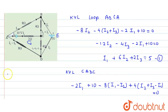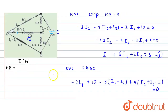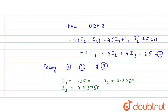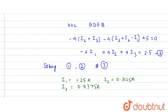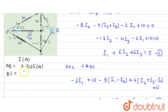Now we find the current in each branch. In branch AB, the current equals i2 = 0.3125 A. In branch BC, the current is i2 + i3 = 0.3125 + 0.9375 = 1.25 A.